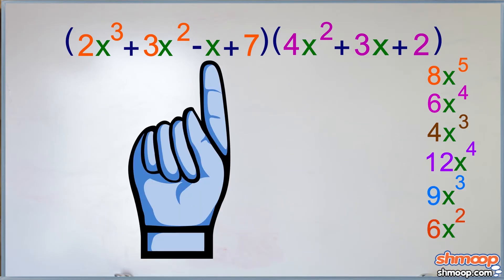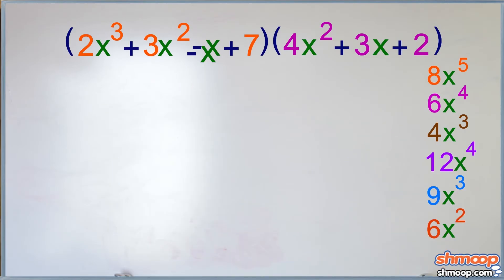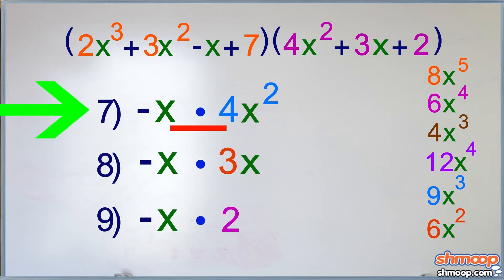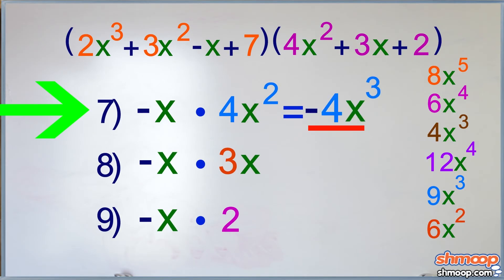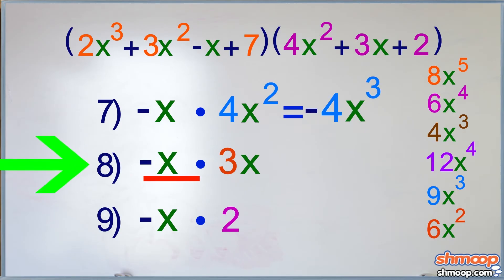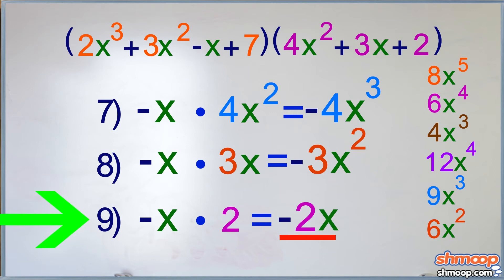Now, for the third term in the first polynomial — this thing — don't forget the minus sign. That's going to turn all our answers here negative. Negative x times 4x squared is negative 4x cubed. Negative x times 3x is negative 3x squared. And negative x times 2 is negative 2x.